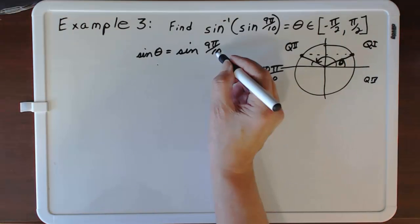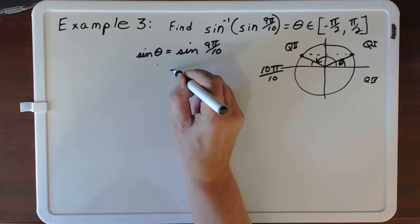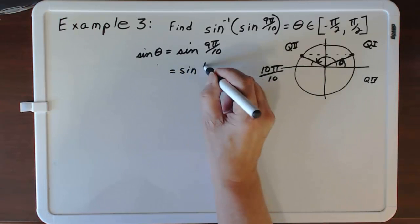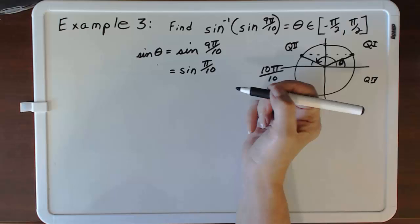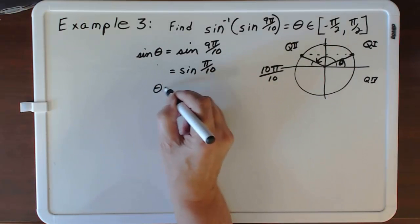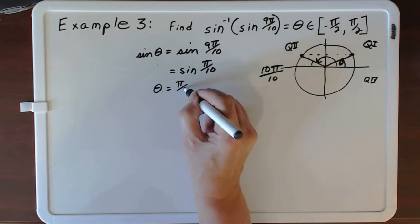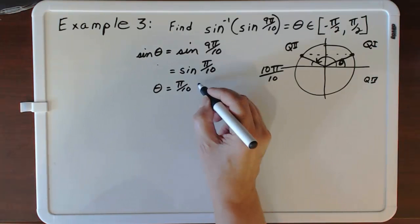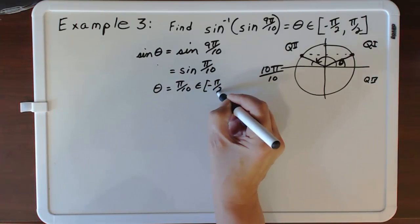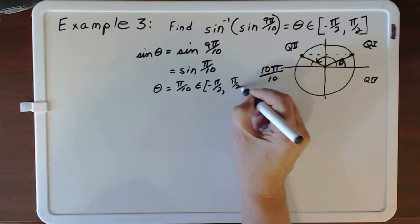So we have that the sine of 9π over 10 equals the sine of π over 10. From here, we see that theta equals π over 10. π over 10 lives inside negative π over 2 to π over 2.